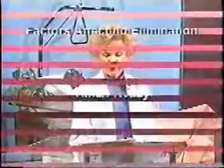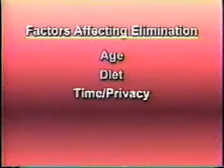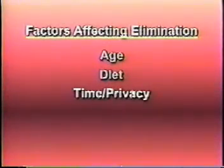Fiber, which is the undigestible residue in the diet, provides bulk in the fecal matter and keeps things moving along. Time and privacy are also important factors in bowel elimination. It is a sensitive function that requires time and privacy for the intestinal muscles to relax and allow elimination to occur.